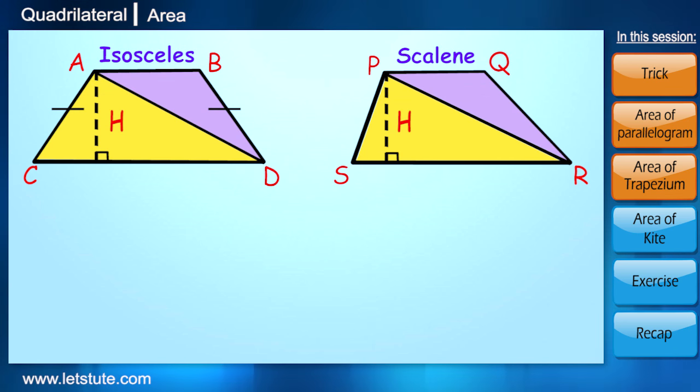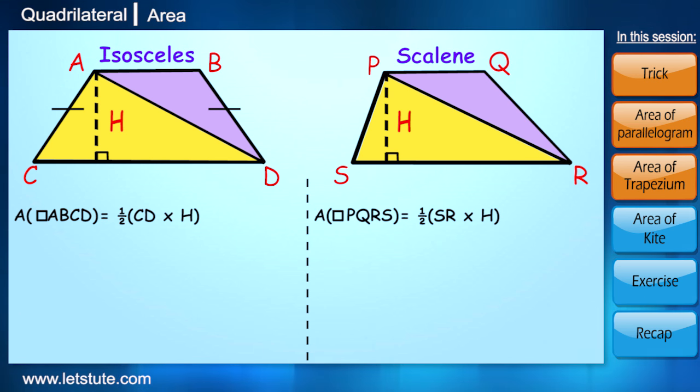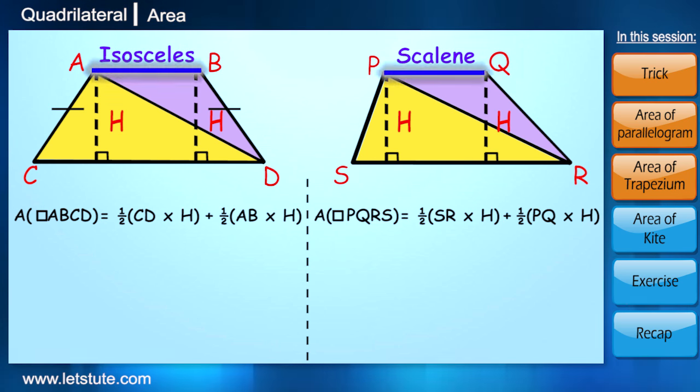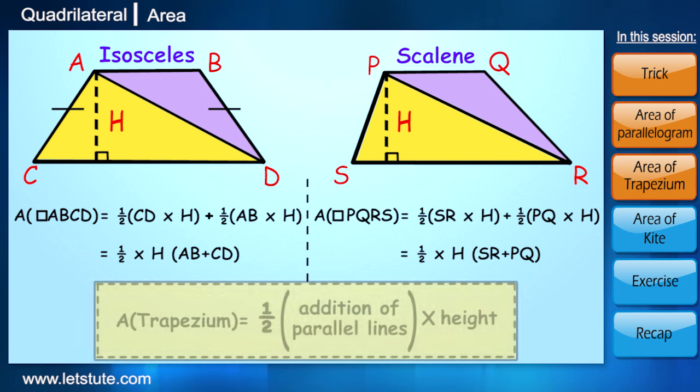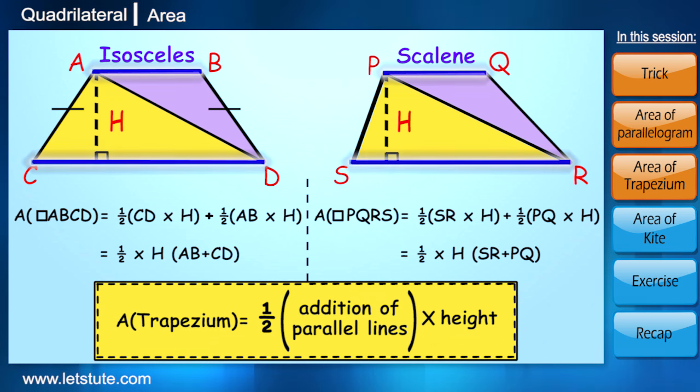Third step: add the areas of these two triangles. So we'll get area of trapezium ABCD equals half times CD into h, where h is the height, plus half times AB into h. Now we can take half and height common, so we'll get half times addition of parallel sides into the height. Right, so this becomes the formula to calculate area of any kind of trapezium. Isn't it easy and seems meaningful?